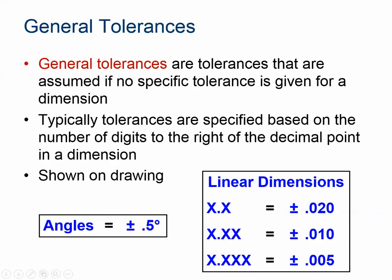If it's an angle, there's about a half degree of variation both plus and minus. For a linear dimension with one decimal place, the tolerance allowed in either direction is ±0.020. If you indicate more precision with two decimal places, that tolerance drops to ±0.010, and if you indicate even more precision with three decimal places, it's ±0.005 in either direction. So you make that assumption if there's no tolerance specified.